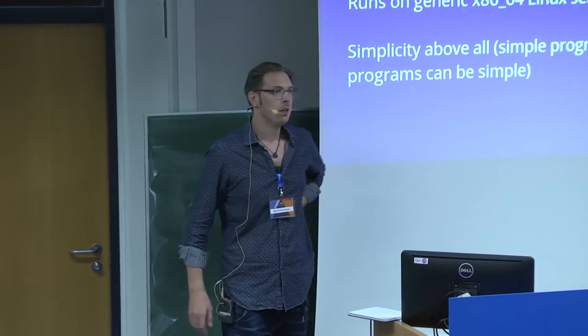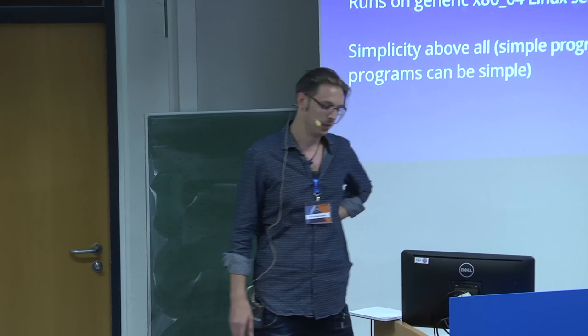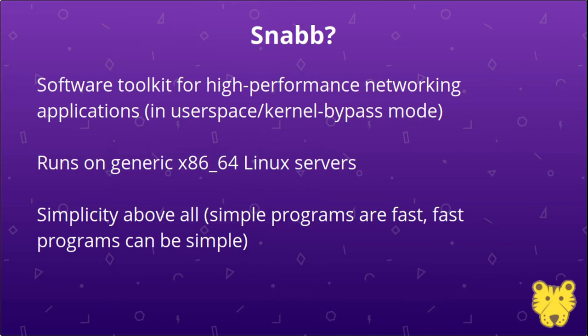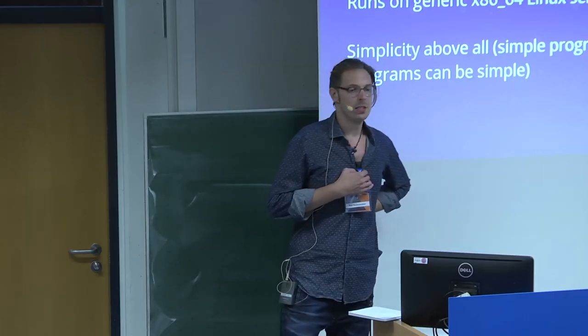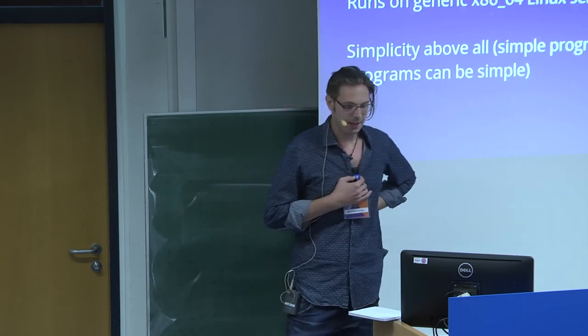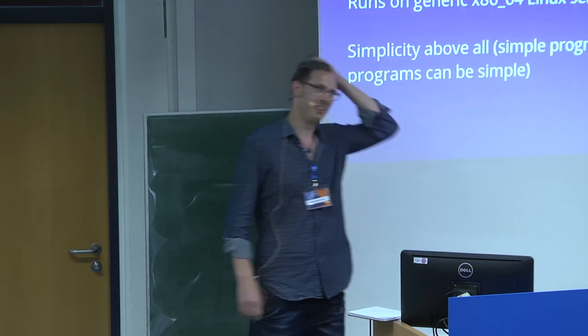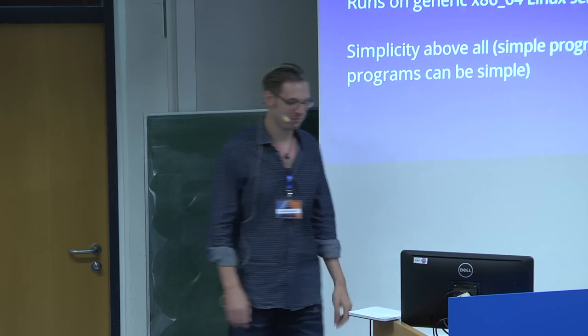What's Snap? Snap is a software toolkit for writing high-performance networking applications in user space — also known as kernel bypass mode. Other examples include DPDK or Cisco's VPP. It runs on generic x86-64 Linux servers. Snap has a strong design focus on simplicity. We believe that simplicity translates to efficiency, and that fast programs don't need to be complex. If you've looked at the DPDK code base, you might believe otherwise — we believe the opposite is true.